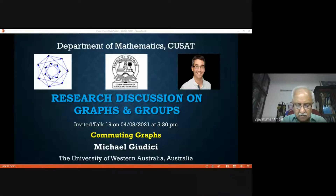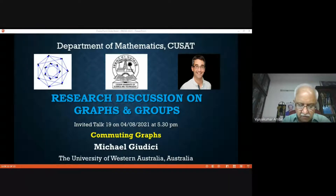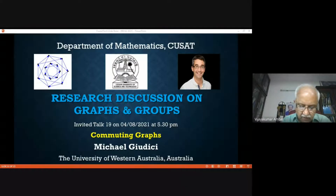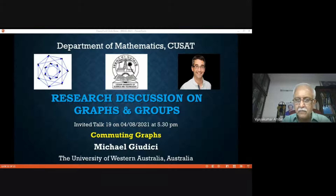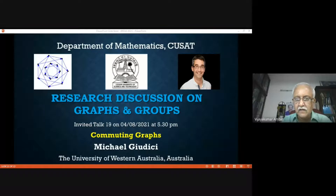He has received numerous awards, including the 2005 Kirkman Medal and 2012 Hall Medal from the Institute of Combinatorics and its Applications. He was awarded the 2020 Gavin Brown Prize of the Australian Mathematical Society, which is awarded for an outstanding and innovative piece of research in the mathematical sciences published by a member of the society for the past 10 years. He is also an editor at the Journal of Group Theory, Journal of the Australian Mathematical Society, and the Electronic Journal of Combinatorics, and has published more than 70 excellent publications.